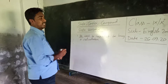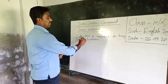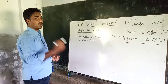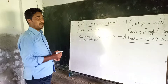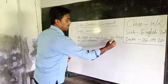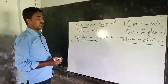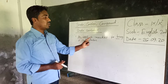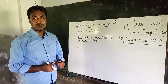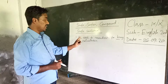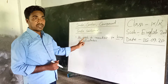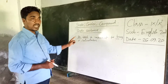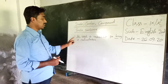In this sentence, the subject is 'he,' the finite verb is 'went,' and 'to buy' is a non-finite verb. Since there is one subject, one finite verb, and one independent clause, this is a simple sentence.